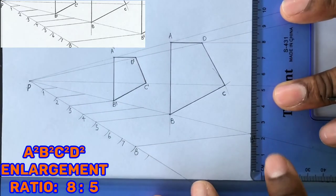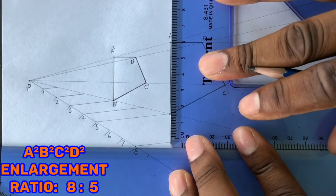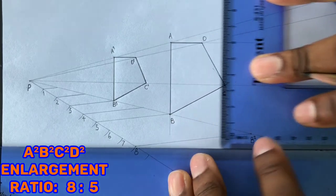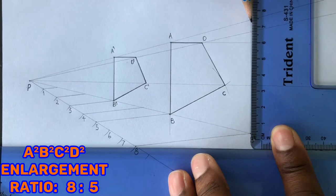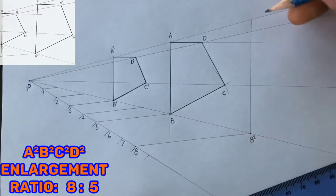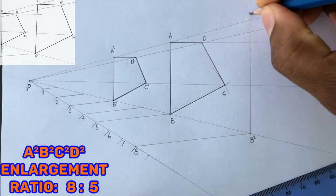With the use of your two set squares, draw a parallel line to line AB from point B2. Identify and label this intersection as A2.